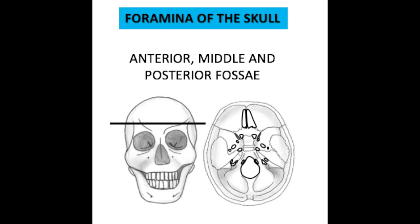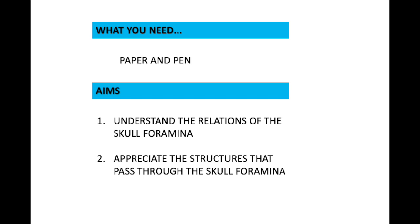This video aims to teach about the foramina of the skull from the superior view, found in the anterior, middle, and posterior cranial fossa. You will need a pen and paper as it is hoped that you will draw along in order to gain the most from this experience. Coloured pencils and pens are optional. By the end of this video tutorial, you will understand the relations of the skull foramina and appreciate the structures that pass through.